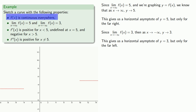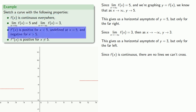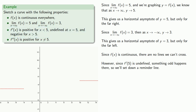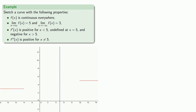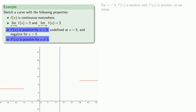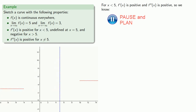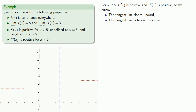Since f of x is continuous everywhere, there are no lines we can't cross. However, since f prime of 5 is undefined, something odd happens at x equals 5, so we'll set down a reminder line — we can cross it, but something strange will happen there. For x less than 5, the derivative is positive and the second derivative is positive, so the tangent line slopes upward and is below the curve. We can draw a placeholder point and sketch the curve through it, knowing we'll adjust its location and shape slightly.